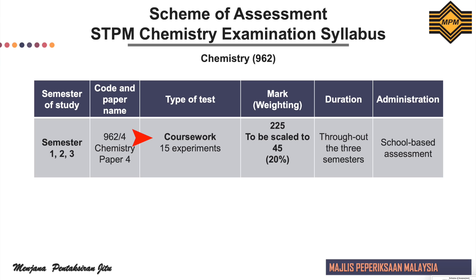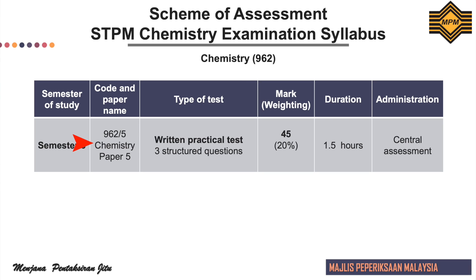The coursework consists of 15 experiments that should be done throughout the three semesters, with five experiments for each semester. Each experiment carries 15 marks. The total mark for this paper is 225 marks, which is equivalent to 20%. The coursework will be assessed by the subject teacher. Paper 5 consists of three structured questions. The total mark for this paper is 45 marks, which will be scaled to 20%. The duration for this paper is 1.5 hours and will be centrally assessed by MPM.